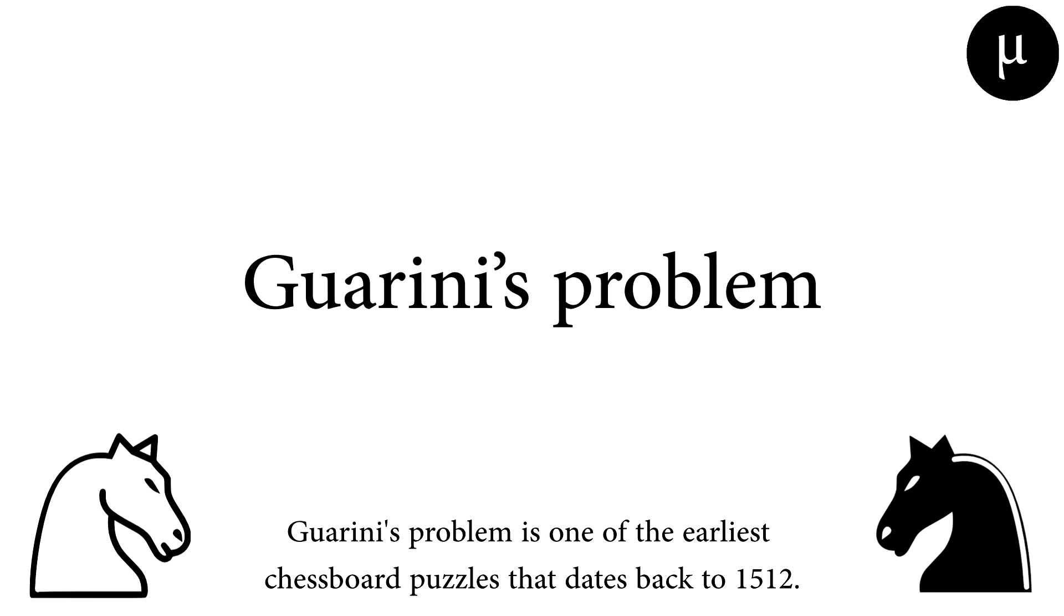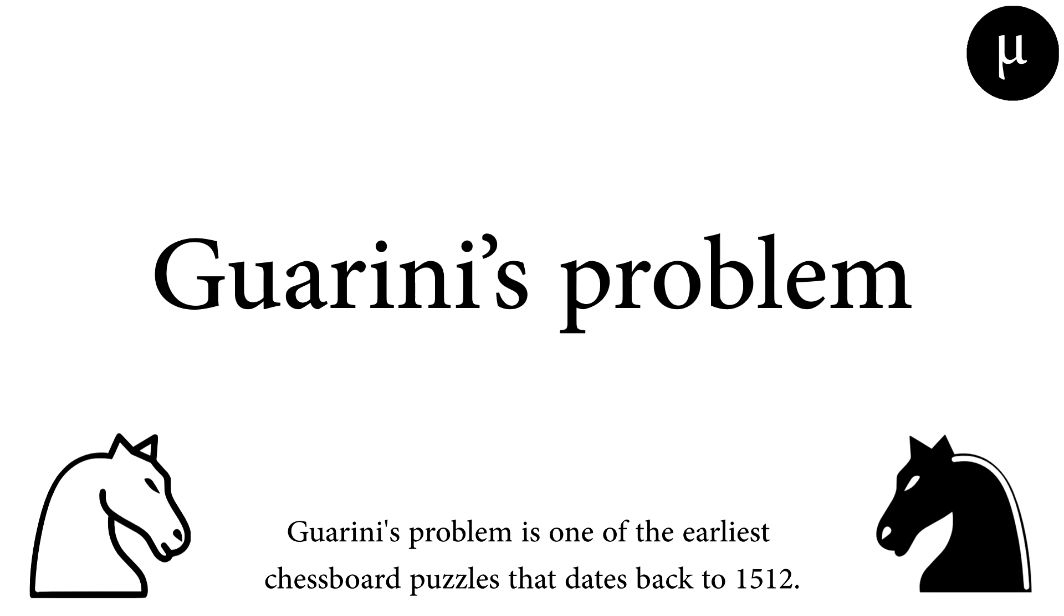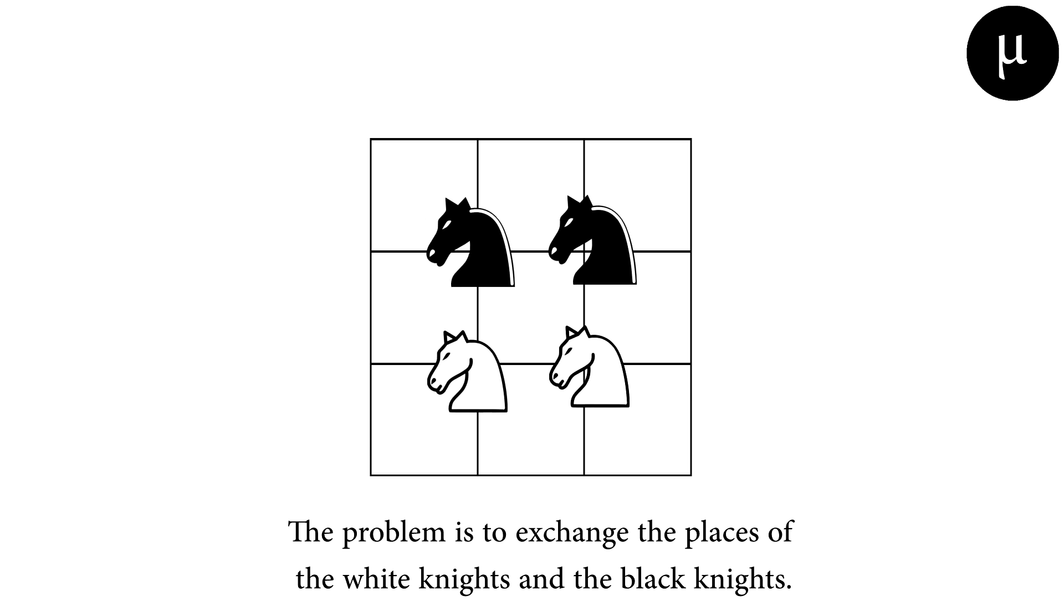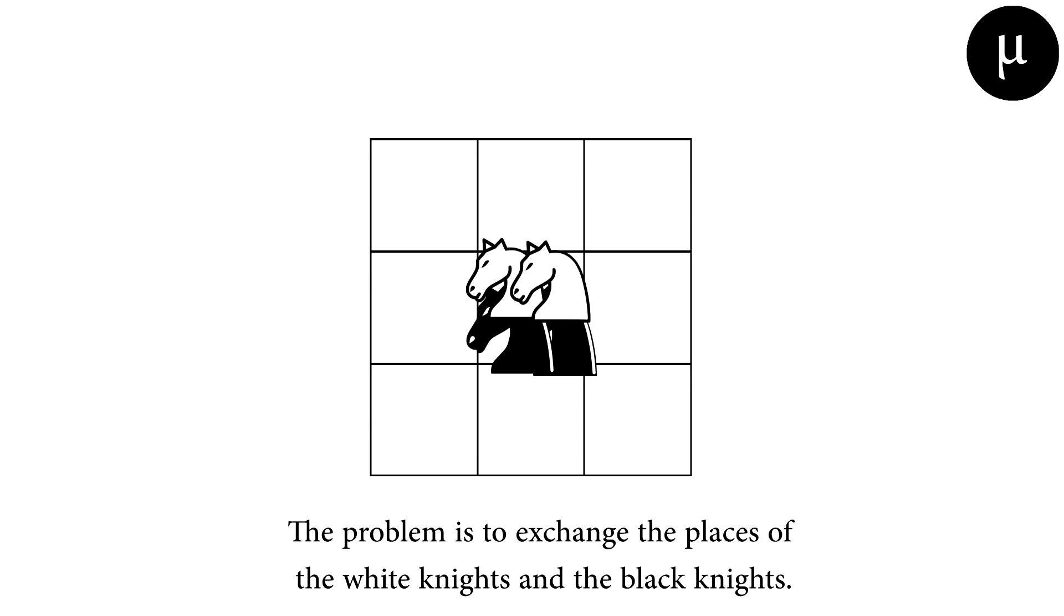Goverini's problem is one of the earliest chessboard puzzles that dates back to 1512. This puzzle involves four knights, two white and two black, at the four corners of a small 3x3 chessboard. The problem is to exchange the places of the white knights and the black knights.